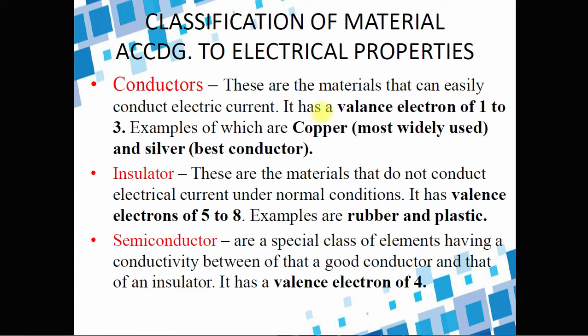When we say semiconductor, these are special types of material that have an intermediary property — being both a conductor and an insulator. Sometimes they can conduct and sometimes they don't. So a semiconductor, in other words, limits the flow of electrons. Semiconductors, if we look at the periodic table, have a valence electron of 4.